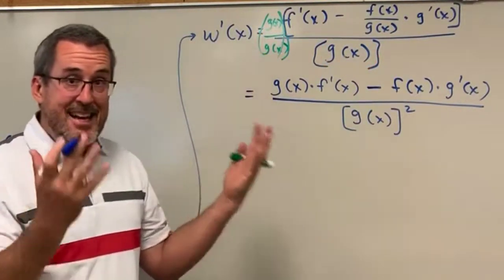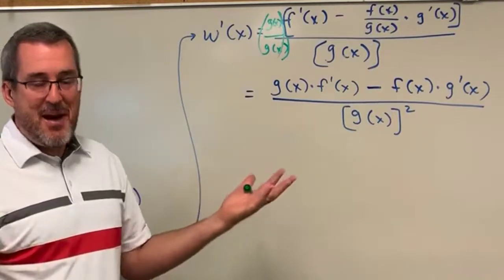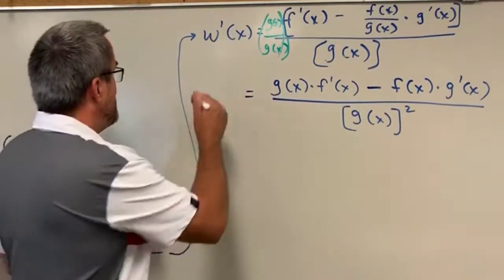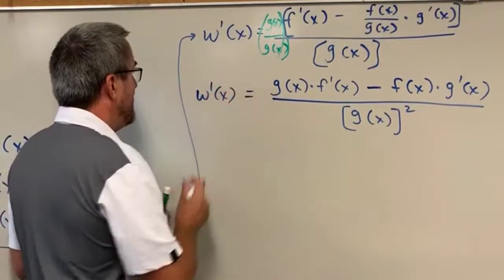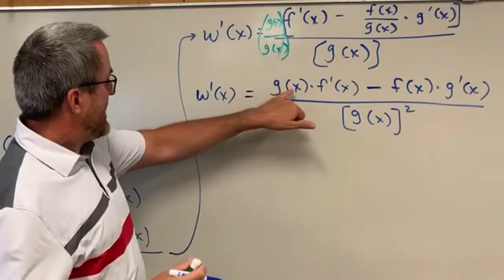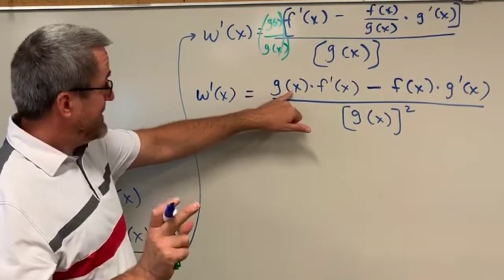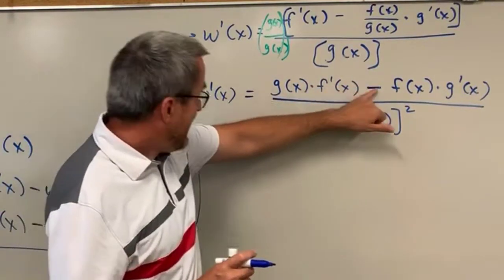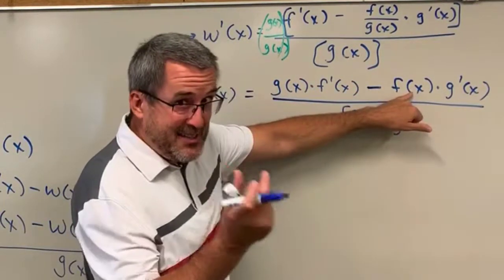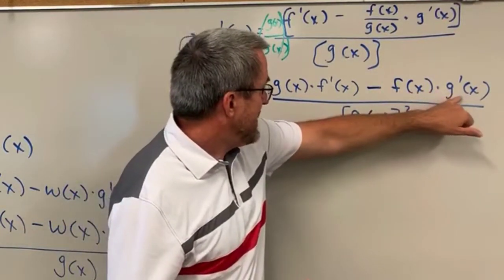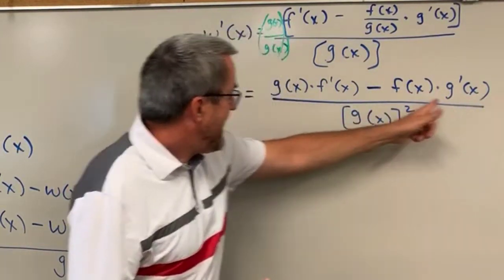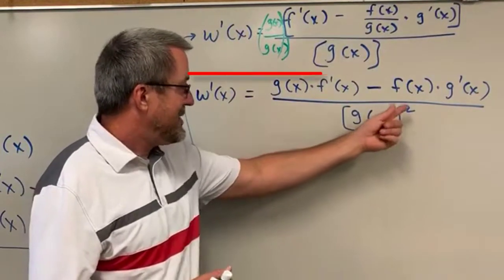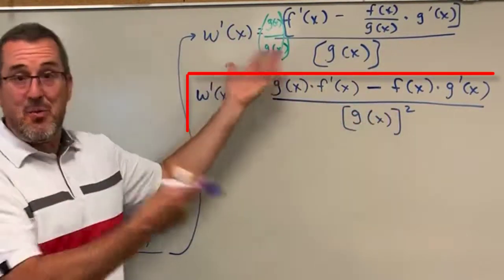So the neatest way to express the quotient rule is this: to take the derivative of a quotient, take the denominator exactly as is, multiply it by the derivative of the numerator, minus the numerator as it was times the derivative of the denominator, and divide that entire difference by the denominator squared. The quotient rule.